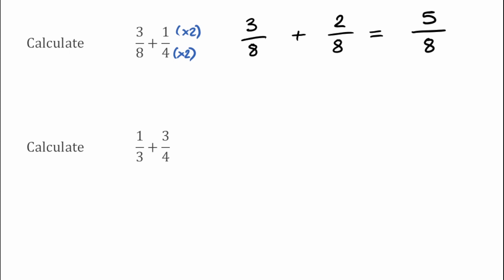We're going to do exactly the same thing for this next question. We've got 1 over 3 add 3 over 4. Looking at the denominators 3 and 4, the lowest common multiple of them is 12. So we're going to turn these two fractions into fractions over 12, and that will give us an answer over 12.